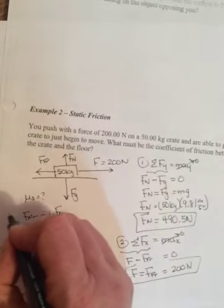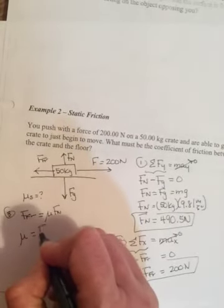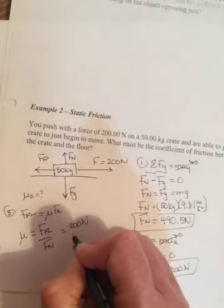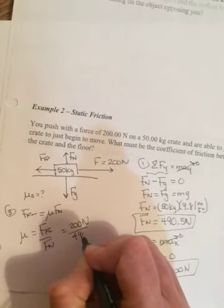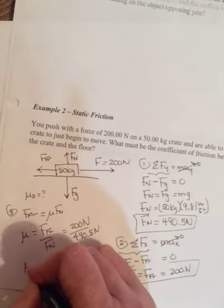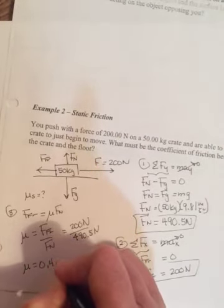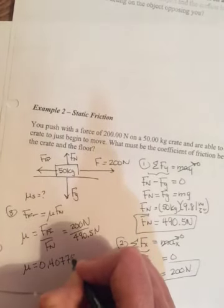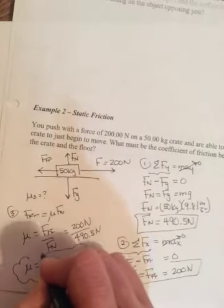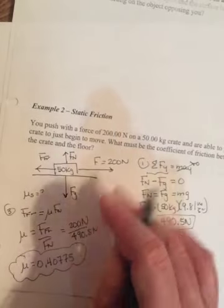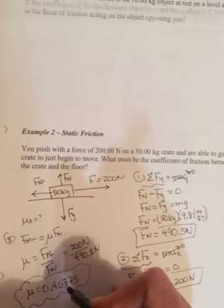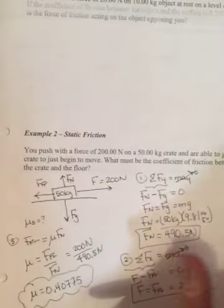Now that we have friction and we have Fn, we can come up here in step 3 and rearrange for mu, so friction divided by Fn. So 200 newtons divided by 490.5 newtons. Do the math, and you get a mu of 0.40775. Notice there are no units because they cancel. Now remember the coefficients are tiny, so please don't round this to just 0.4. You've got to keep more than just 1 sig fig. So that's example 2.